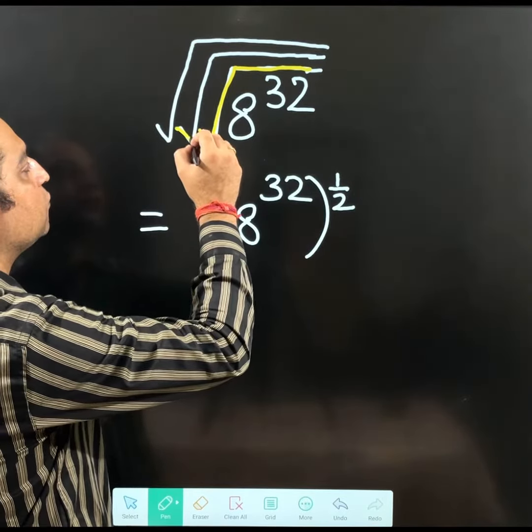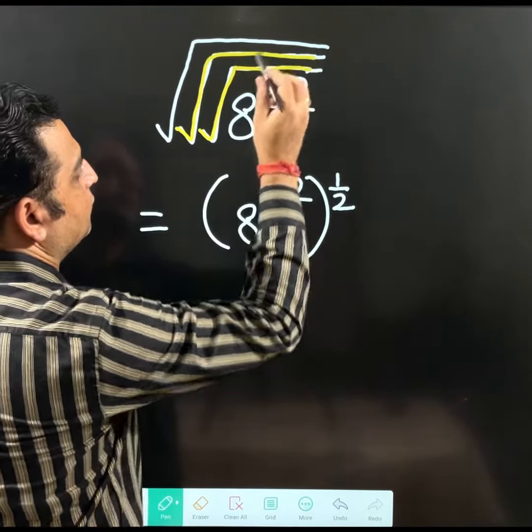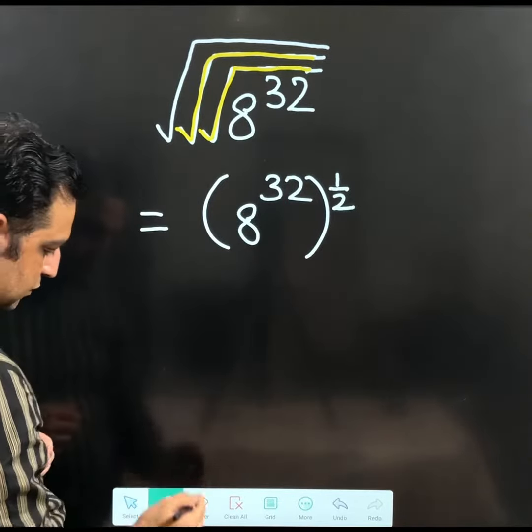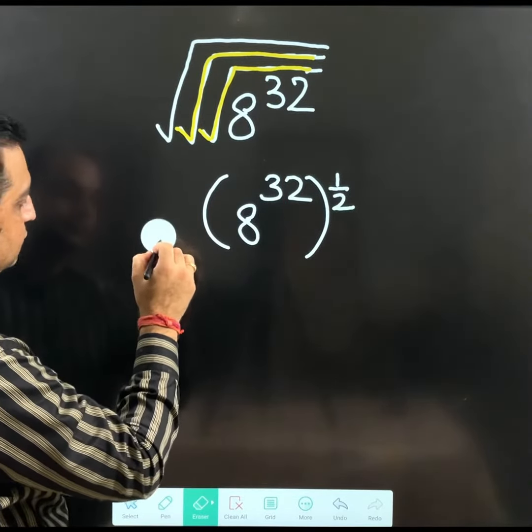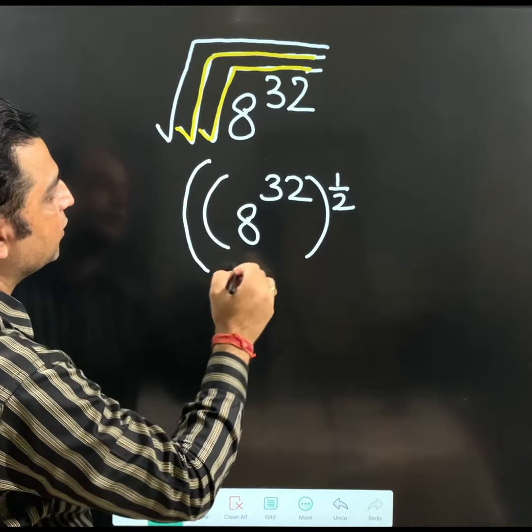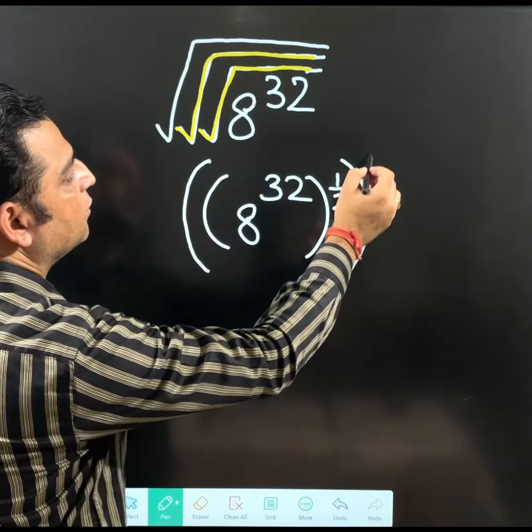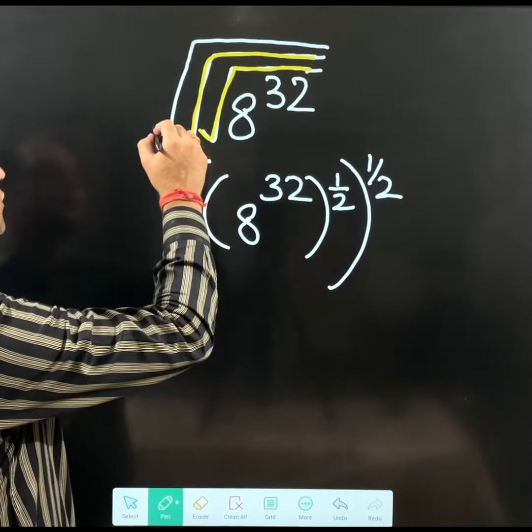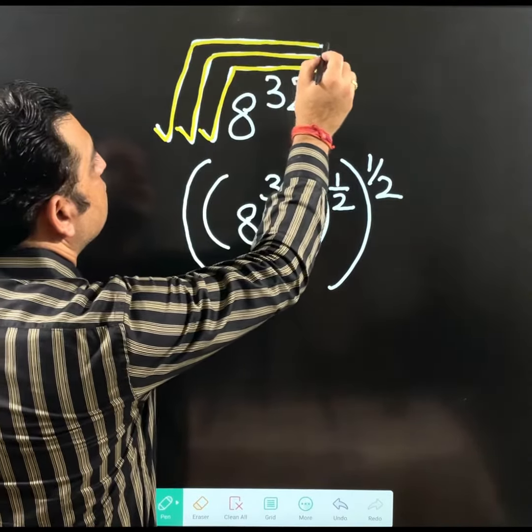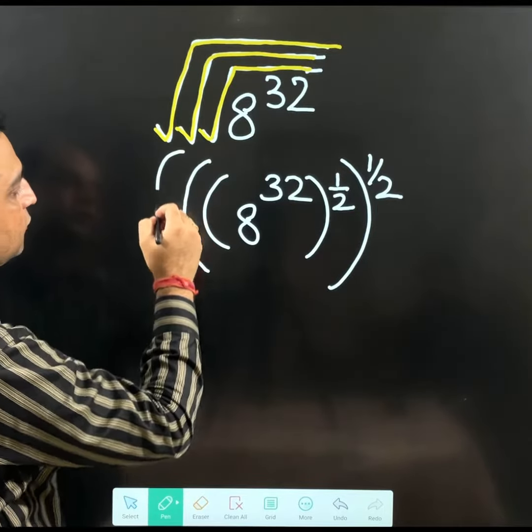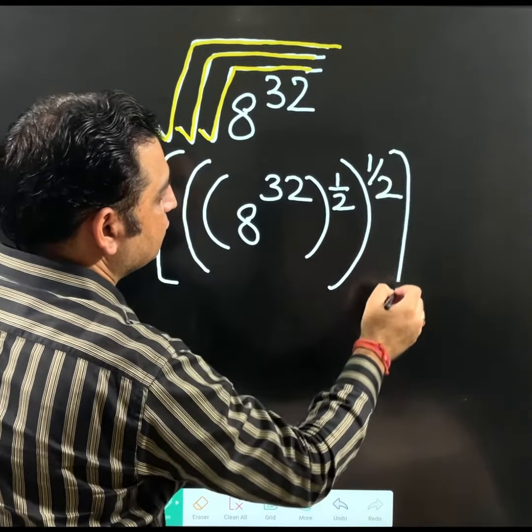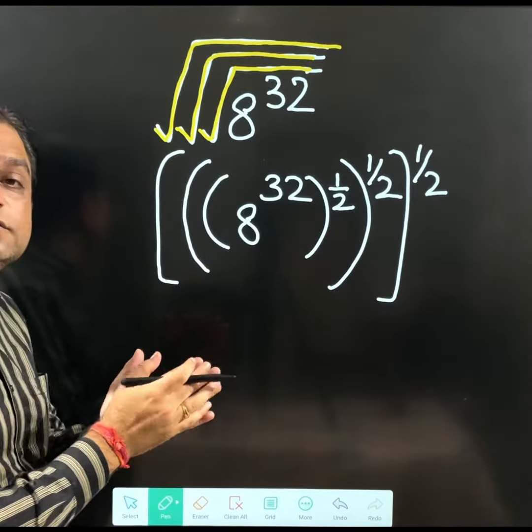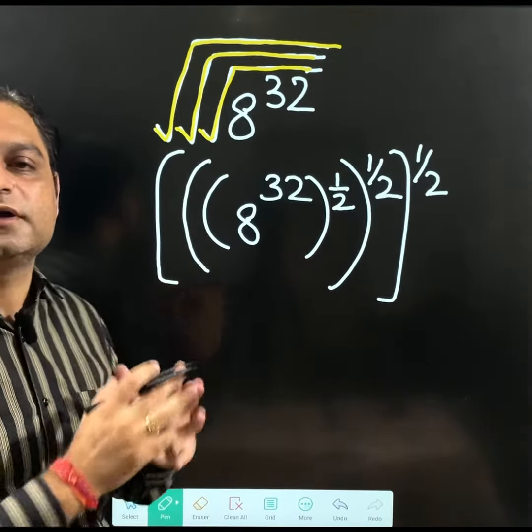And what I am going to write? Another bracket. And 1 over 2. And then the last one. This square root. It is removed. And then place 1 over 2. These both situations are same as I explained you earlier.